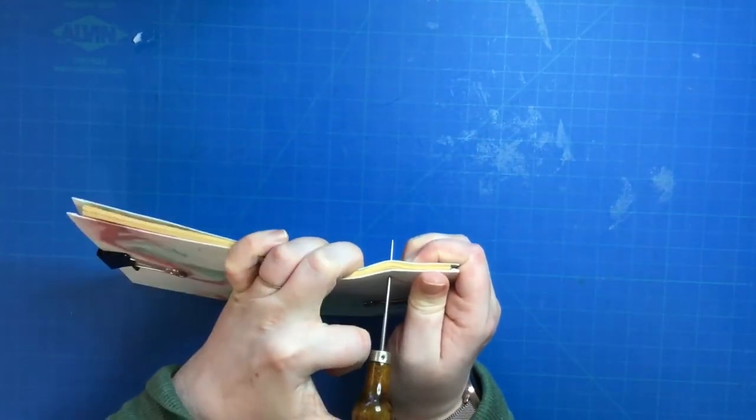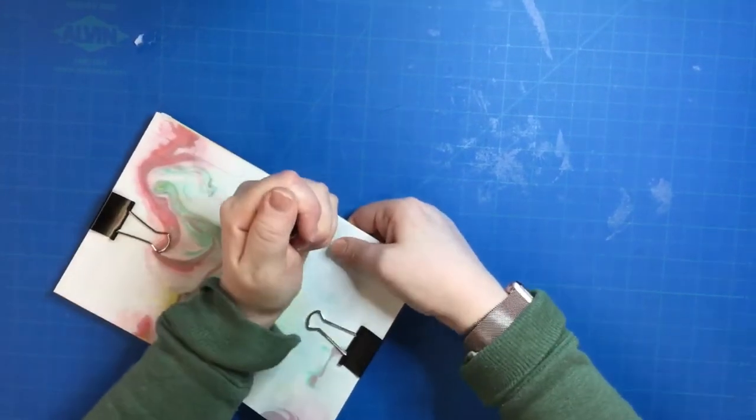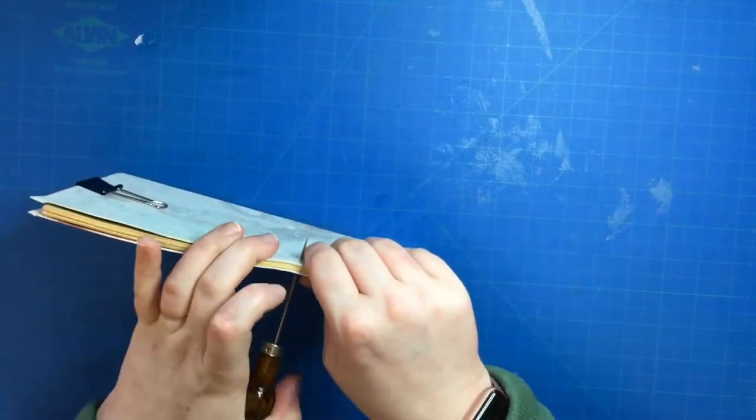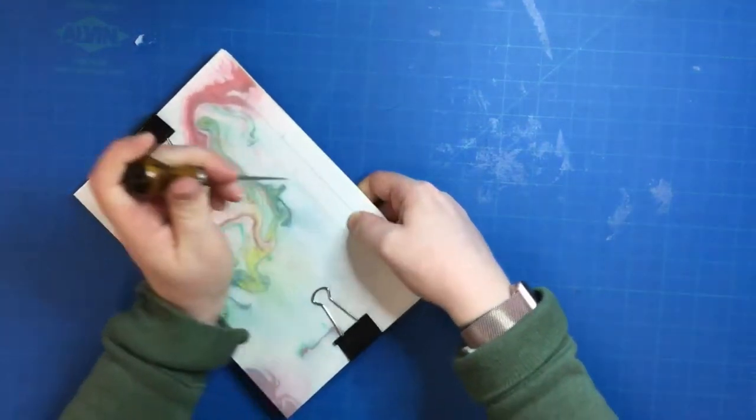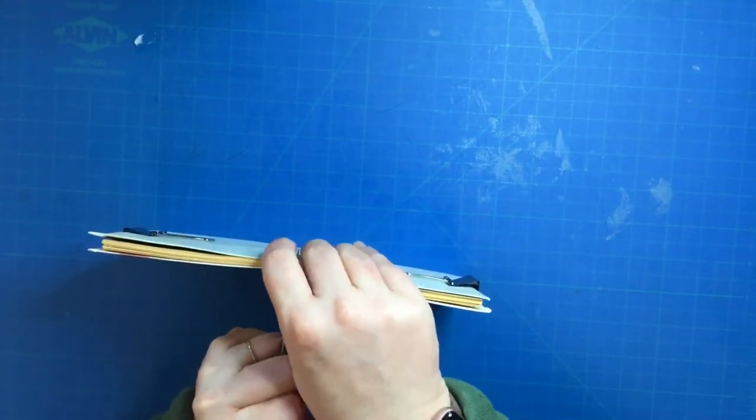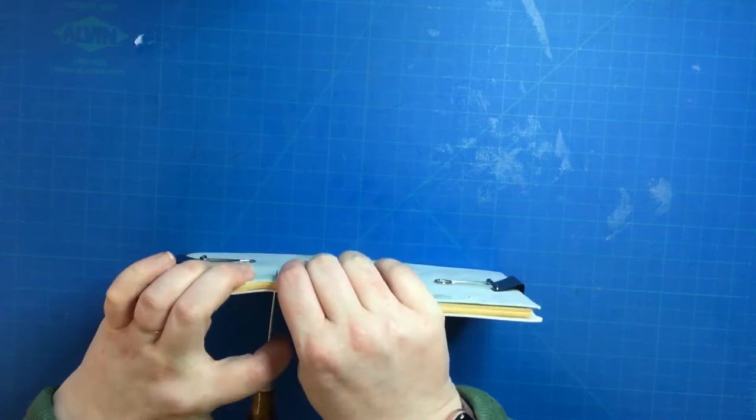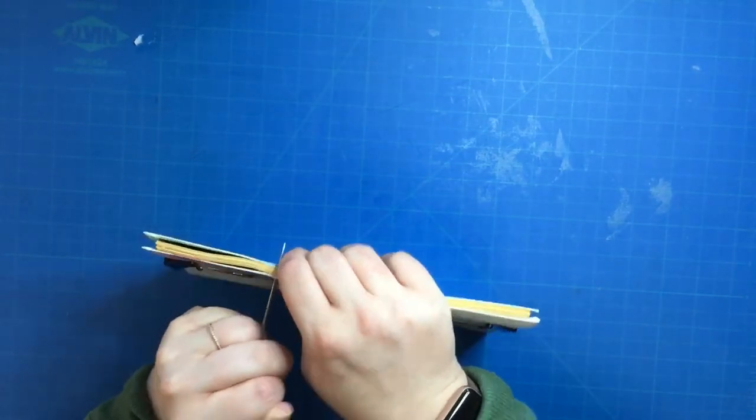Poke the holes, making sure you go through the widest part of the puncher so that the needle goes through easily. Be careful and do not poke your fingers or hands while going through the paper.